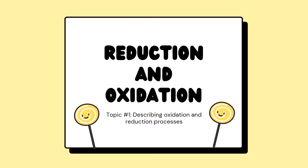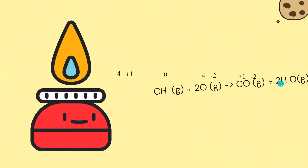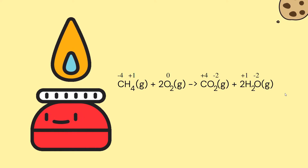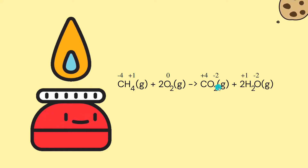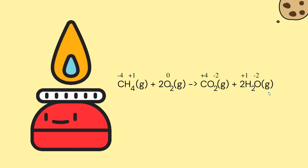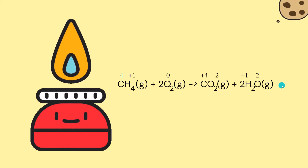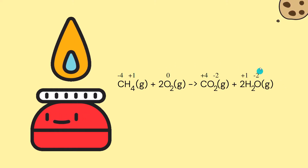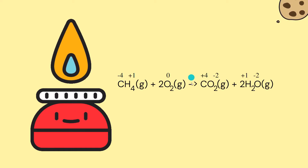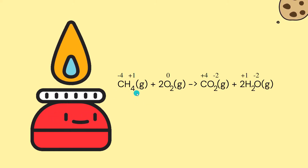Now we move on to the main part of topic 1: what are reduction and oxidation reactions? We are familiar with the combustion of methane gas — methane plus oxygen gas produces carbon dioxide and water. Notice the oxidation number of oxygen decreases from 0 to negative 2, and the oxidation number of carbon increases from negative 4 to plus 4. We see that the chemical species transfer electrons to one another.